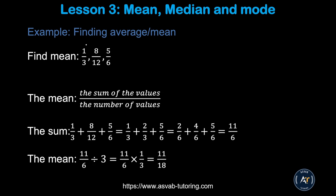This is another one — this is a fraction. Same way, add the fractions together and then find the Average or Mean. The sum of the variables then divide by the number of variables. So add 1/3 plus 8/12 plus 5/6. You remember from the previous lesson that if you want to add fractions, you have to find the common denominator, which is 6. Then after you find the common denominator, find the equivalent fractions. If you add them up, that gives you 11 over 6.